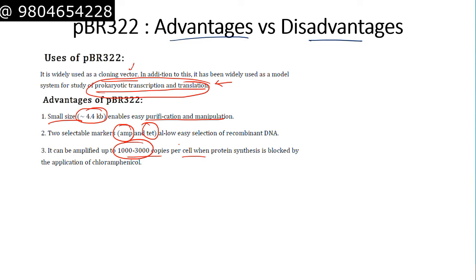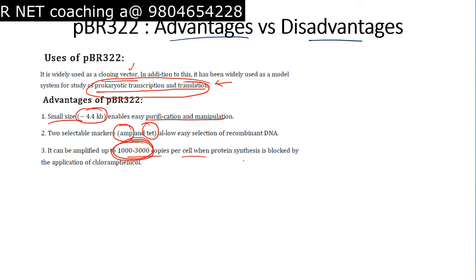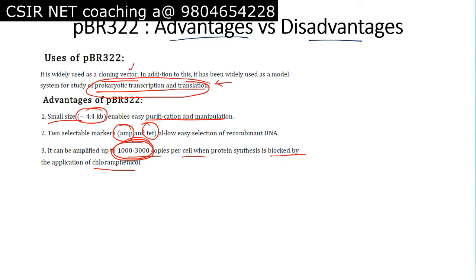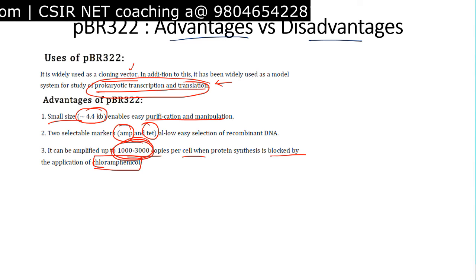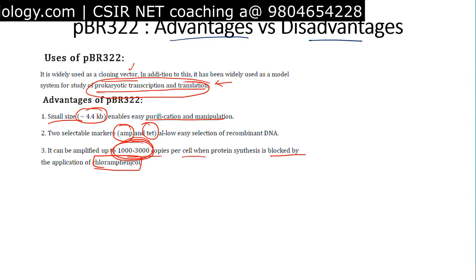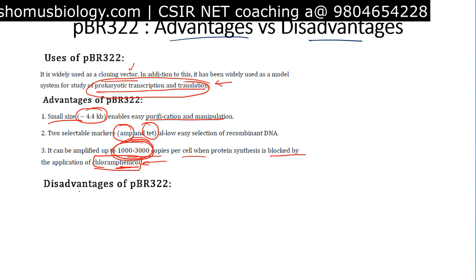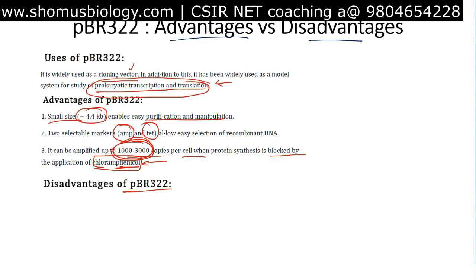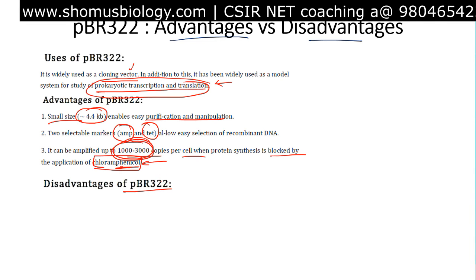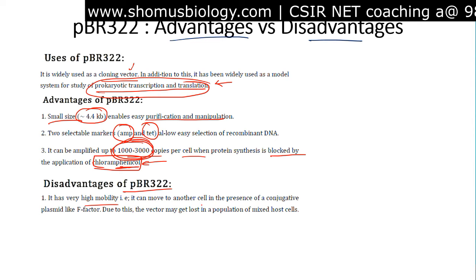PBR322 can be amplified up to 1000 to 3000 copies per cell. Although the ROP region normally restricts copy number, if protein synthesis is blocked by the antibiotic chloramphenicol — so the plasmid only replicates without producing proteins — you can achieve 1000 to 3000 copies per cell.